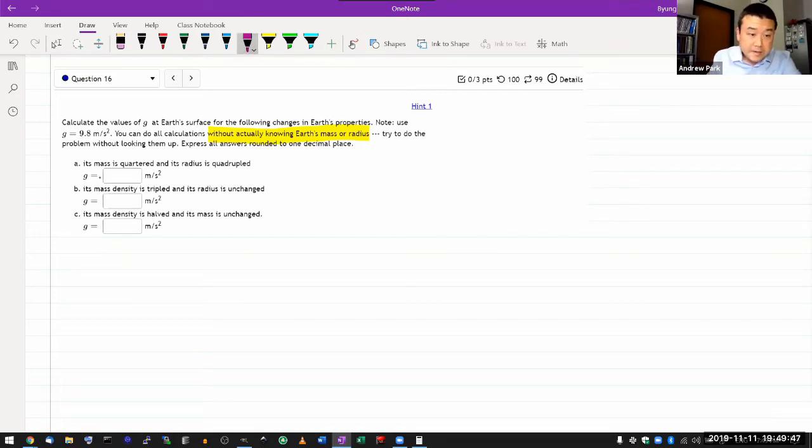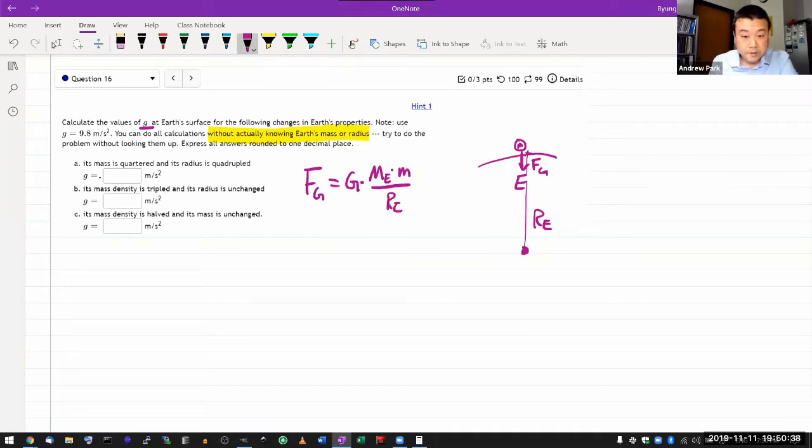It says calculate the values of g at Earth's surface for the following changes in Earth's properties. What's good for you to know here is this background knowledge that according to Newton's law of universal gravitation, gravitational force—here's my Earth, here's an object of mass m near the surface of the Earth—there's going to be a gravitational force pulling it down. The gravitational force is equal to G times the product of the masses, mass of the Earth times the mass of the object divided by distance squared. And here the relevant distance is the distance from the center of the Earth, the radius of the Earth, so radius of the Earth squared.